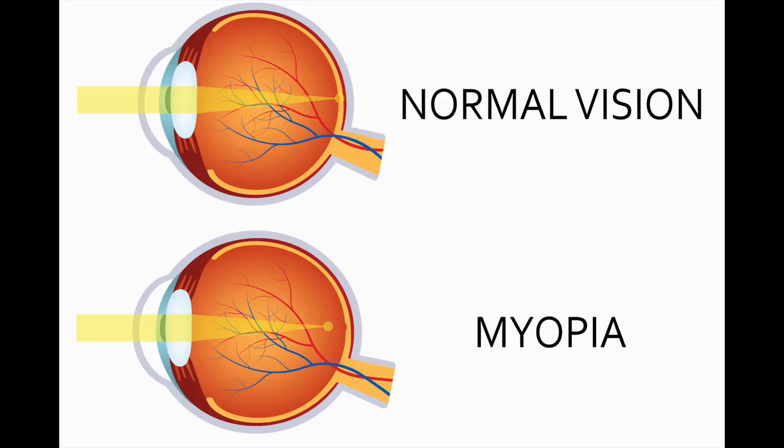Myopia, or nearsightedness, is the most common refractive error or prescription that people will typically have. It occurs when the refractive components of the eyeball, which include the cornea and the lens, don't focus images on the back of the retina but rather focus them in front of it.